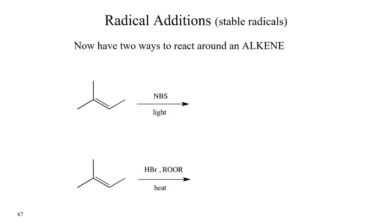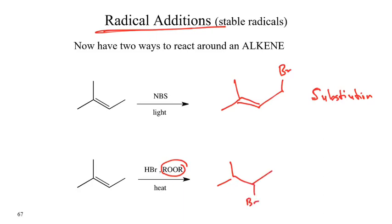So we now have two ways to react around an alkene. This is a bit odd to reference on this slide because it says radical additions. When we're using NBS, what we would expect would be the radical substitution. This is a substitution. If we have HBr, there's that ROAR stepping out at us. We can now do a radical addition where we've now lost the pi bond, but we end up placing the bromine at the least substituted position. We get two different reactions that we can do.